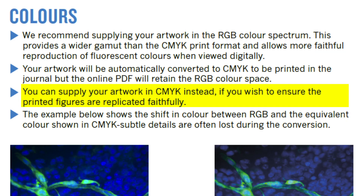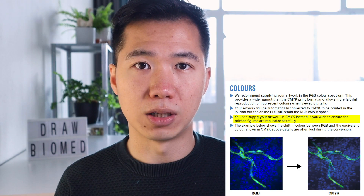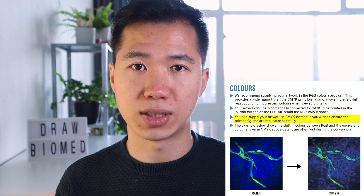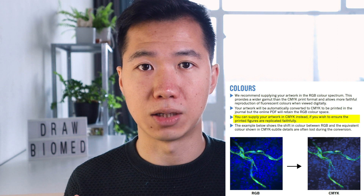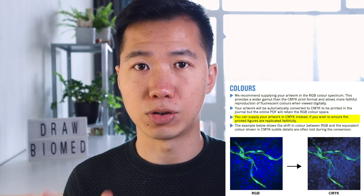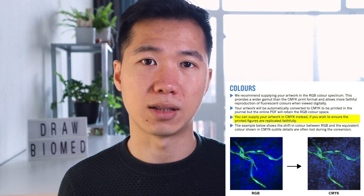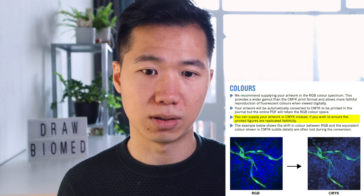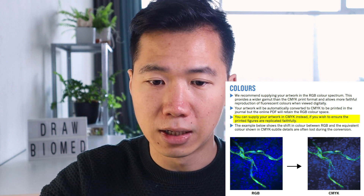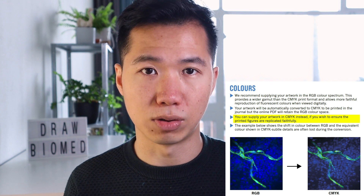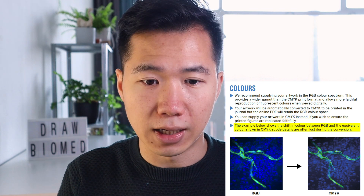That brings us to the third guideline: you can supply your artwork in CMYK instead if you wish to ensure the printed figures are replicated faithfully. So if you want your printed figures to look exactly as you provided them, use CMYK. You might think this contradicts the first guideline recommending RGB, but it actually doesn't — because more than 90% of journal articles are published digitally these days. It looks much better on monitors, and very rarely are articles printed. Usually we just share the PDF around, so RGB is the better choice in most cases.